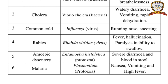Amoebic dysentery: causative organism — Entamoeba histolytica (protozoa); symptoms — severe diarrhea and blood in stool. Malaria: causative organism — Plasmodium (protozoa); symptoms — nausea, vomiting, and high fever.